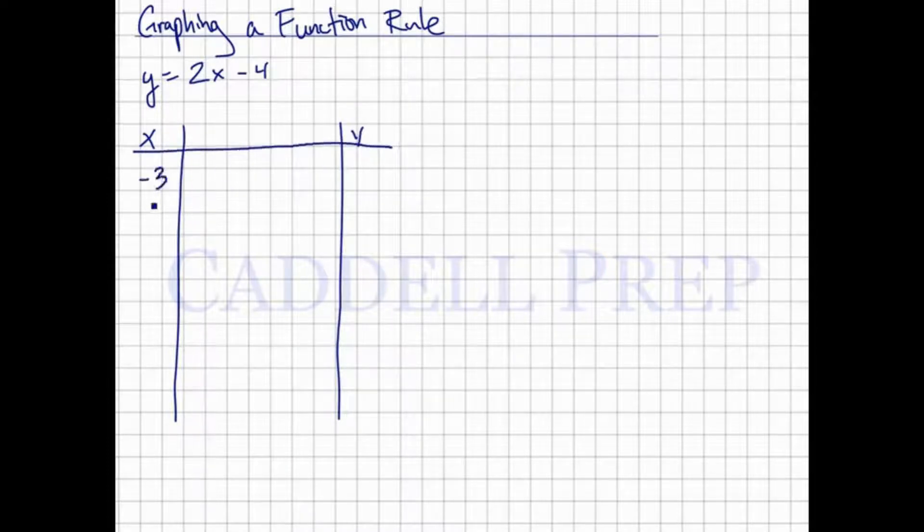So let's try negative 3, negative 2, negative 1, 0, 1, 2, and 3. And our function is 2x minus 4, and we're going to get the y values.